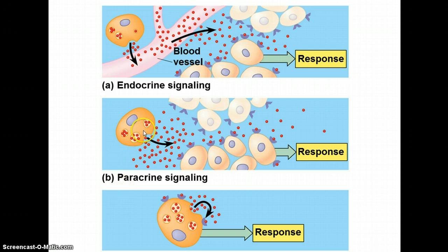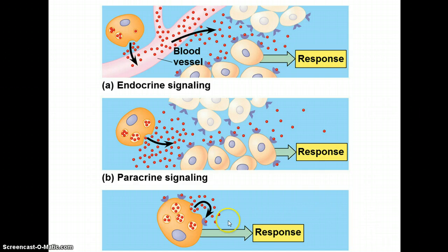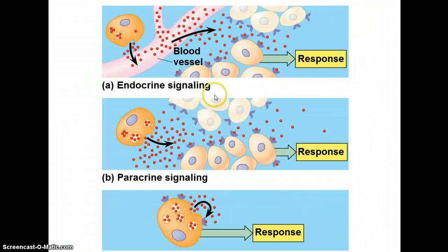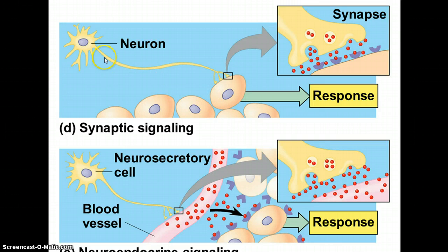When you have direct signaling from one cell to an adjacent cell, this is known as paracrine signaling. Sometimes you have autocrine signaling when a cell essentially signals itself. A variation on the paracrine is what we would call synaptic signaling, where neurotransmitters are released from a neuron to an adjacent neuron or some kind of cell that then elicits a response.